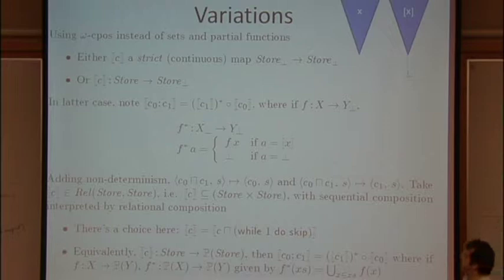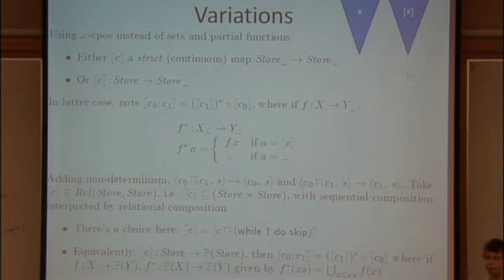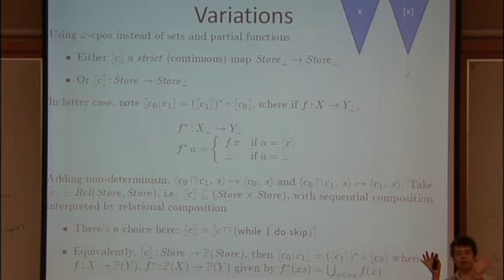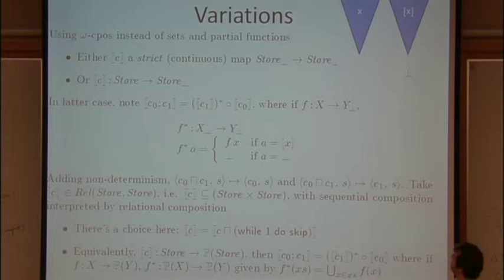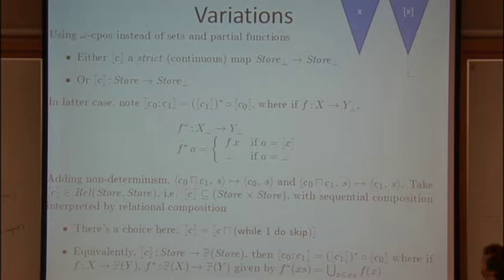But down here if we've got C1 and C2 or C0 and C1 rather, then C0 is a function from stores to stores lifted and C1 is a function from stores to stores lifted and we don't want to plug the two guys together but C0 is returning a stores lifted and C1 only tells you what to do with stores.